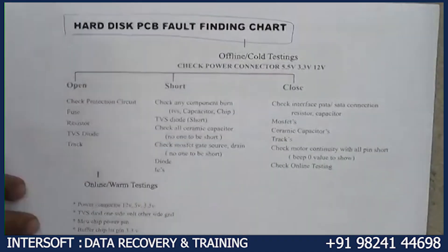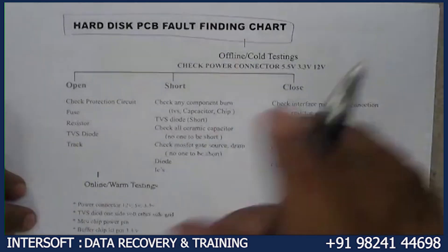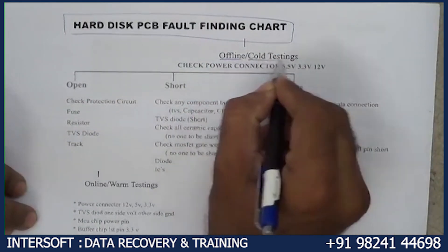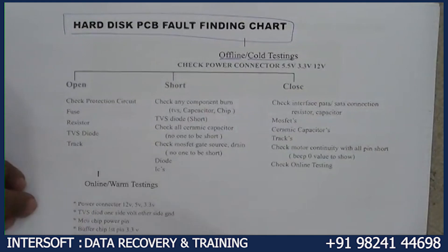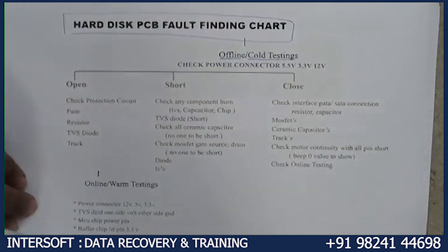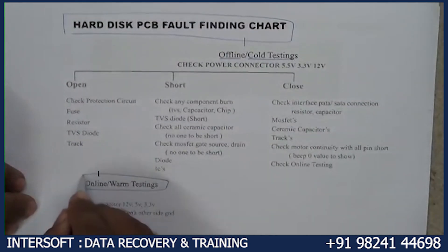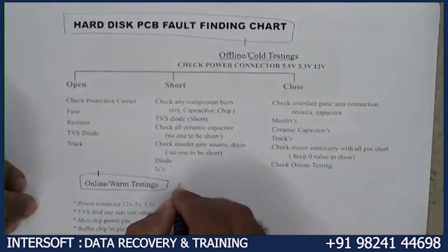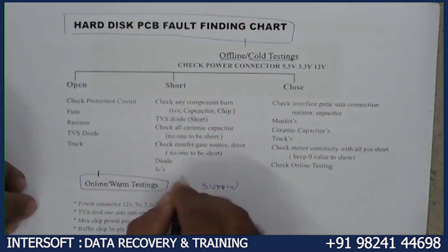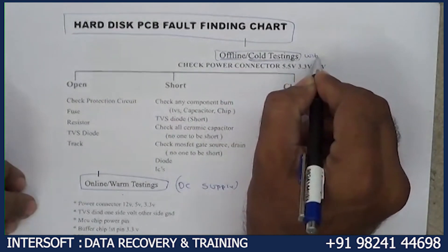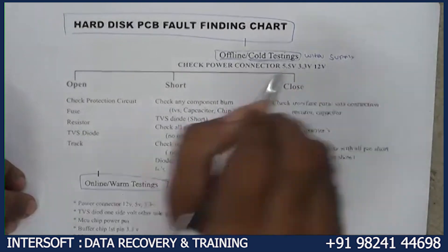In this PCB fault-finding chart, there are two types of testing: online testing and offline testing. Offline means disconnecting the power supply and checking with the diode — that is offline testing. Online testing is warm testing, where after giving supply we check the voltage on DC supply.